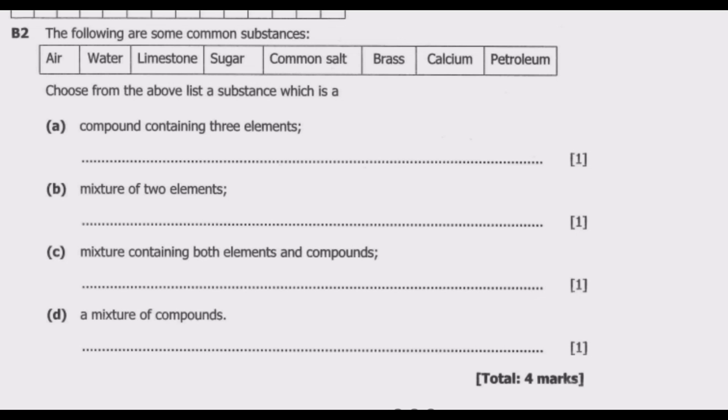Choose from the above list a substance which is a compound containing three elements. So compound we are talking about two or more elements that are chemically bonded. Those are compounds. So let us identify the compounds in this case. We know air is not a compound because it's basically a mixture. It has a composition of different gases of which we have some compounds like carbon dioxide itself, because we have oxygen and carbon coming together to form a compound called carbon dioxide.